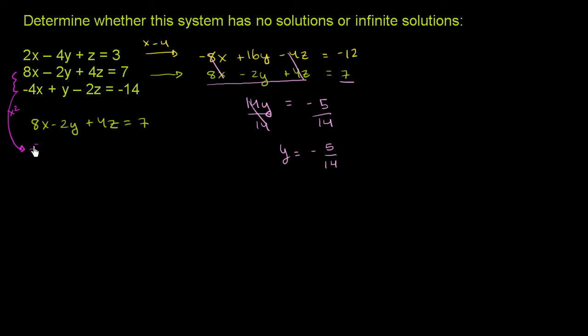And then the second equation over here, I'm going to multiply it by 2. Negative 4x times 2 is negative 8x. y times 2 is plus 2y, positive 2y. Negative 2z times 2 is negative 4z. And then negative 14 times 2 is negative 28.